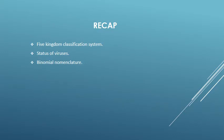Before we start today's lesson, a quick recap of the previous lesson. We did the five kingdom classification system, which was introduced by Whittaker, and we classified all organisms into five kingdoms: Monera, Protista, Fungi, Plantae, and Animalia. Then we discussed the status of viruses — since viruses are acellular particles, they were not placed in any of the five kingdoms. After that we did binomial nomenclature, which is a scientific method of giving names to all living organisms, and every name consists of two parts.